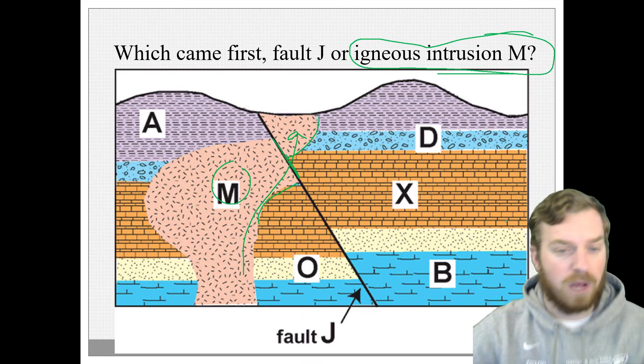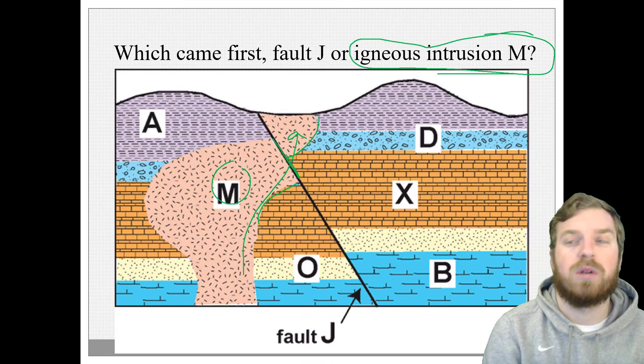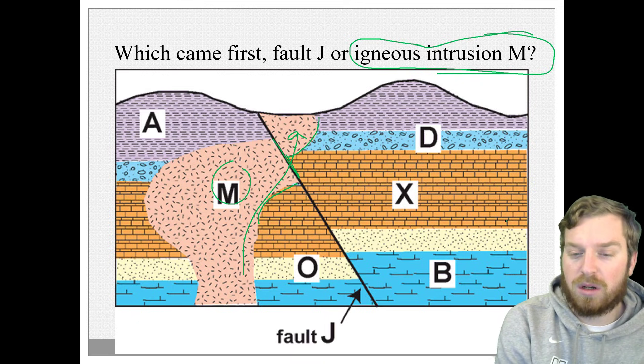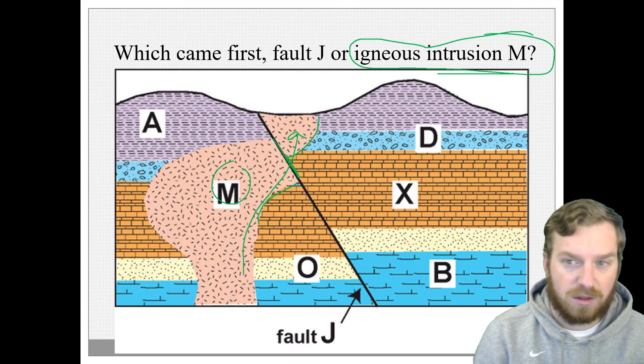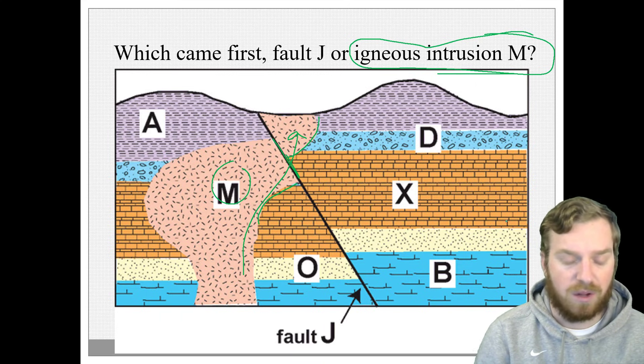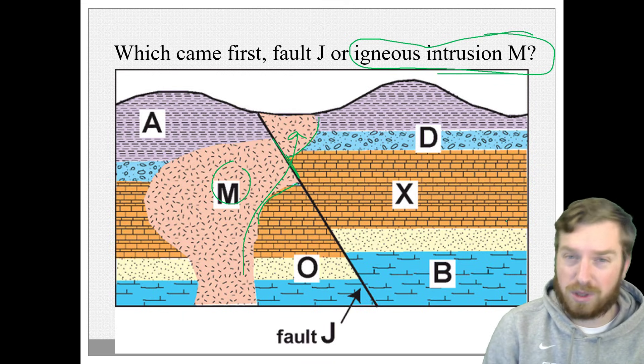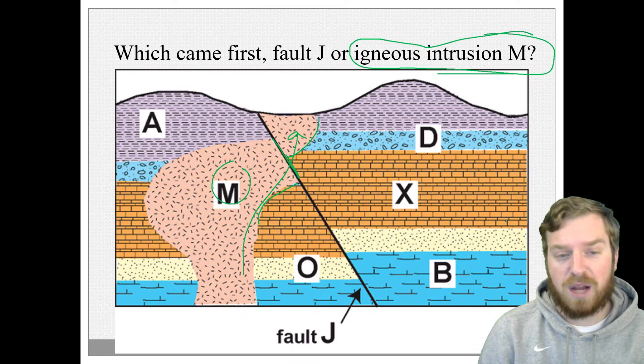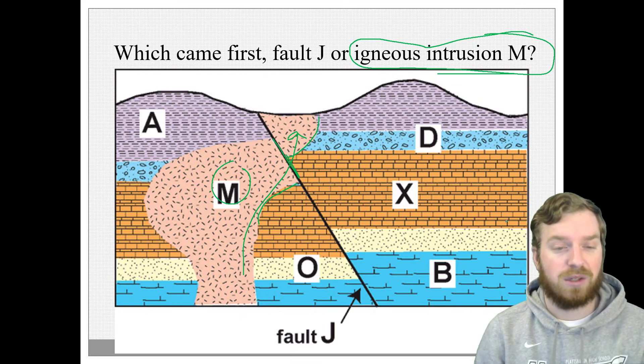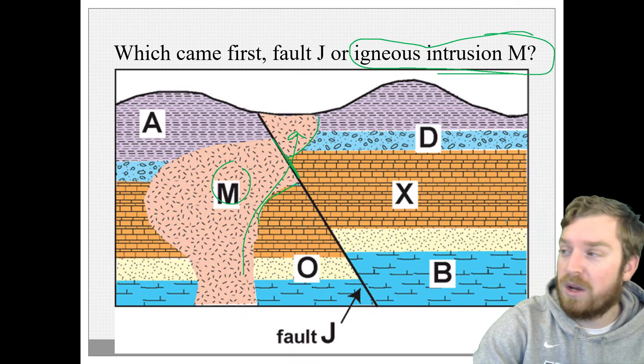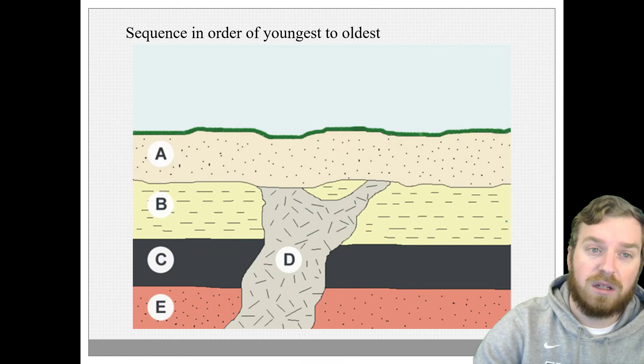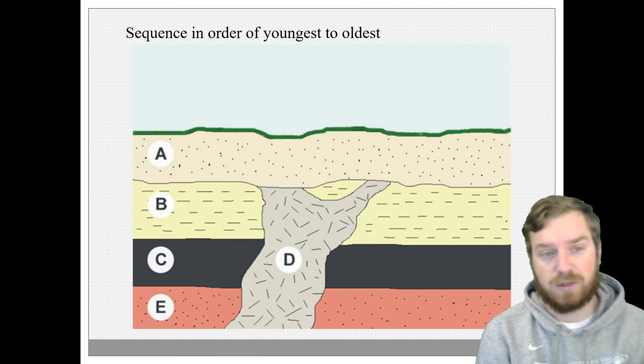Alrighty. One last one. And this one you're going to do on your own. And so this is one of your choice assignments. Or actually sorry, no, this isn't one of your choice assignments of the week. This is going to replace your multiple choice that you would normally do this week. It's actually a little bit easier. So you don't even have to do a multiple choice this week. What you have to do is message me on Schoology the sequence of these rocks.